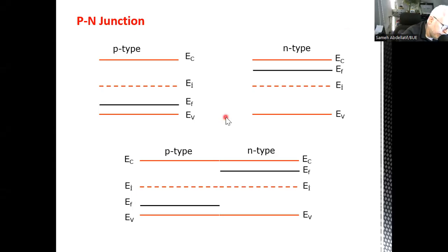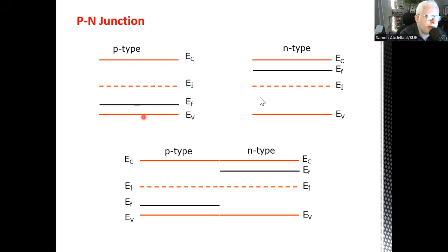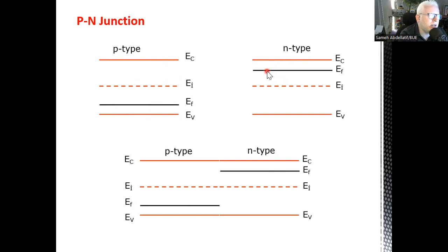Welcome back, my dear students. In the previous part of the first lecture, we demonstrated together the concept of doping in semiconducting material, resulting either in a third-group doping leading to a P-type material with Fermi level more toward the valence band, or N-type doping with a fifth-group material leading to a Fermi level more toward the conduction band.